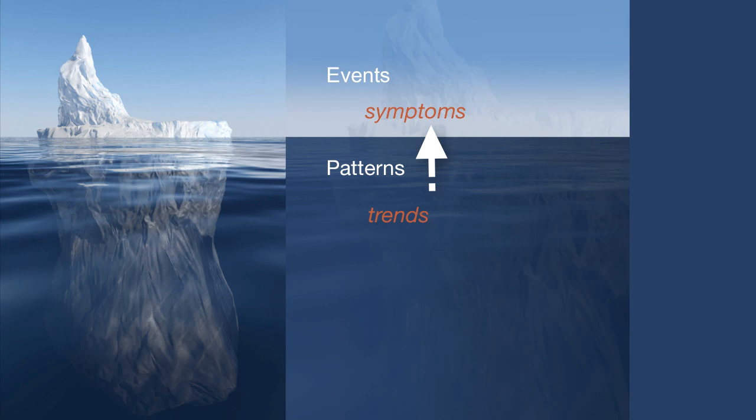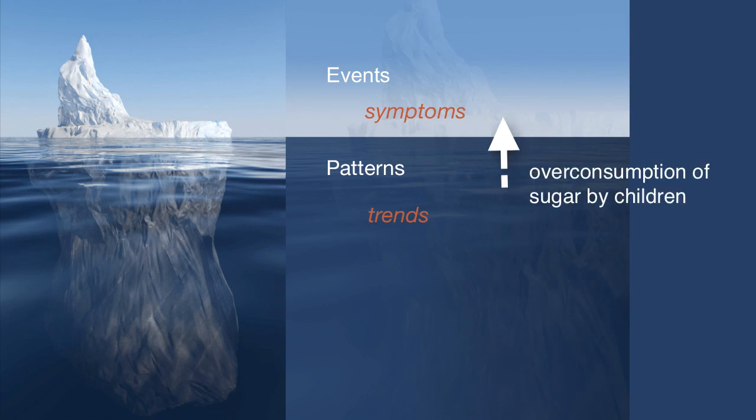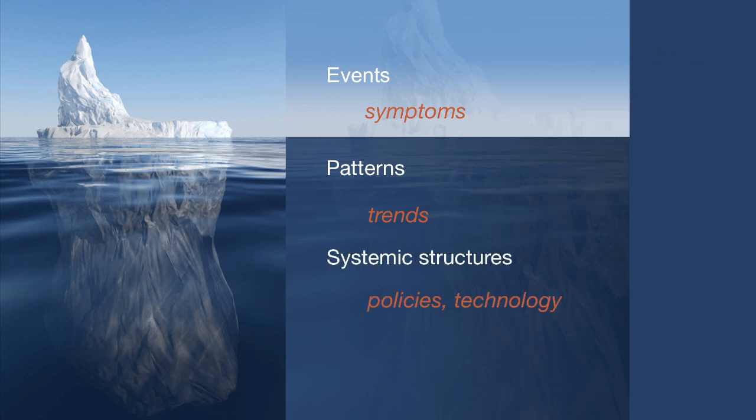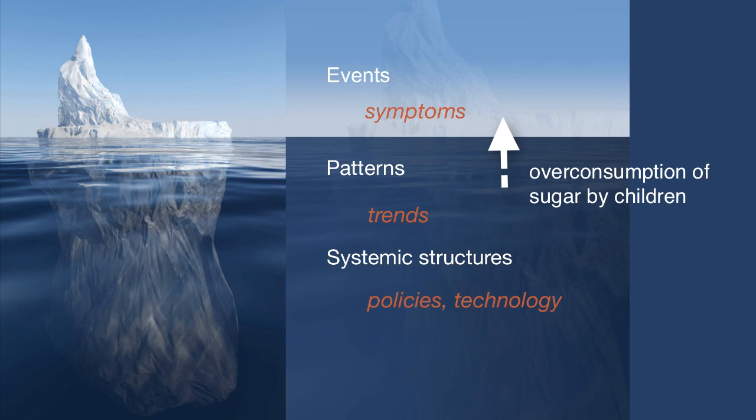What are these forces beneath the surface? There are hidden patterns of behavior or trends that lead to the symptom. In the illustration of diabetes, there is an overabundance of sugar in the diet of children in the United States. Why are children eating so much sugar? Beneath the pattern of this consumption there's a set of systemic structures that cause the pattern.